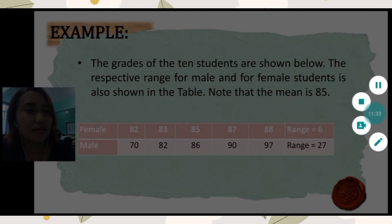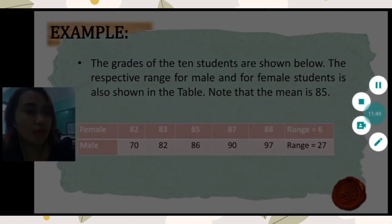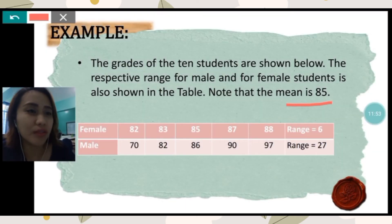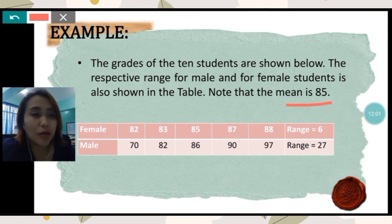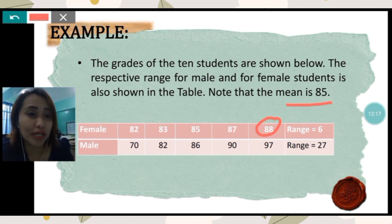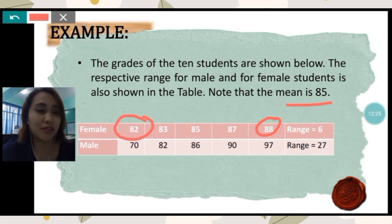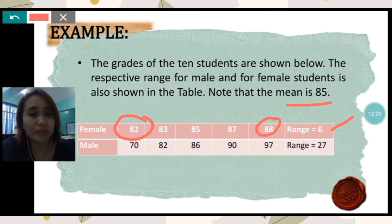For the female students, their scores are 82, 83, 85, 87, and 88. For the male students, the scores are 70, 82, 86, 90, and 97. The mean is 85 — obtained by adding all the numbers and dividing by how many there are. For the female set of data, the range is 6: the highest number is 88, and we subtract the lowest number 82, so 88 minus 82 equals 6. Therefore, the range for the grades of the female students is 6.